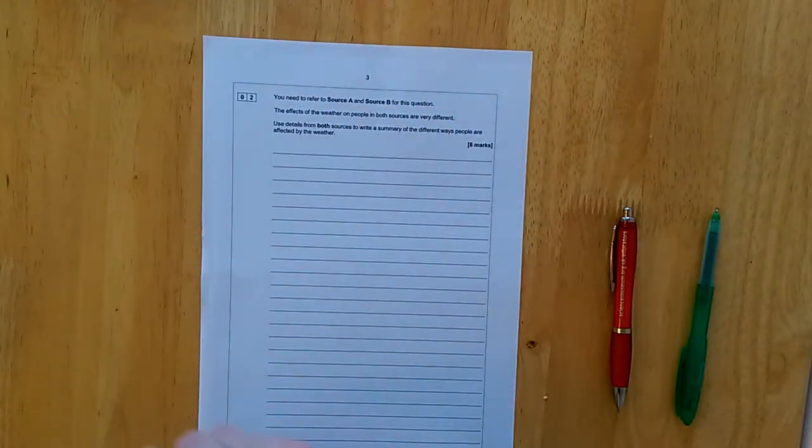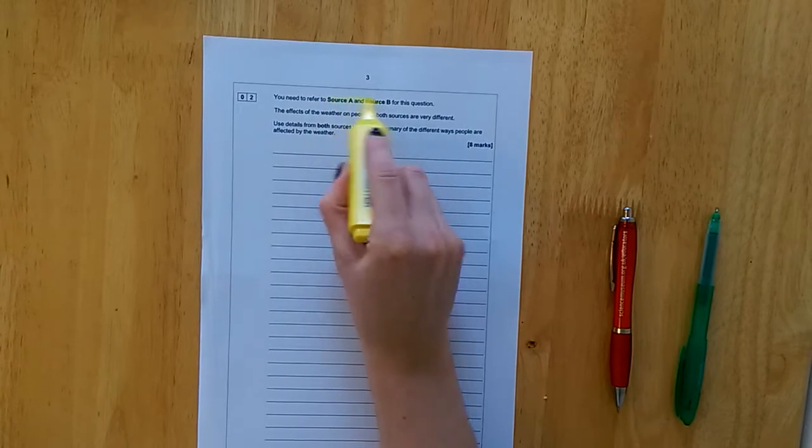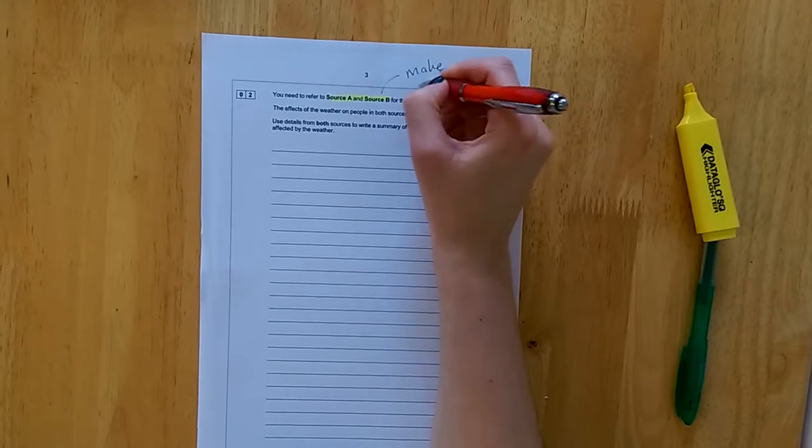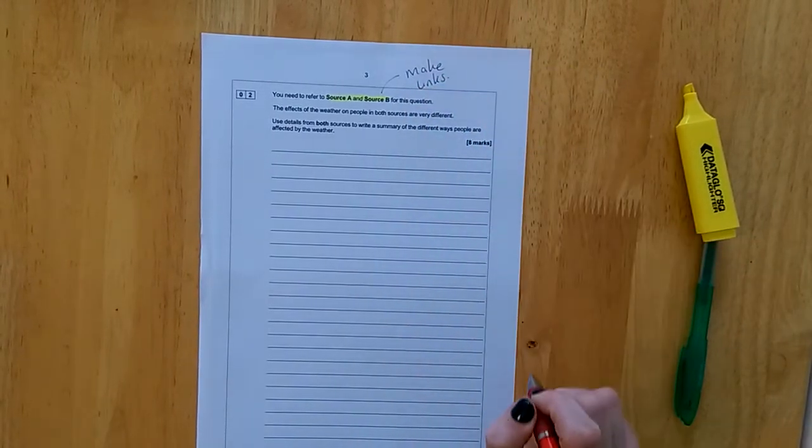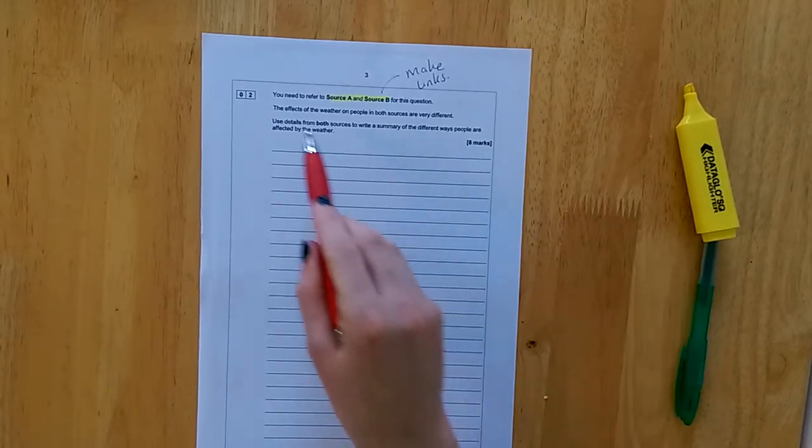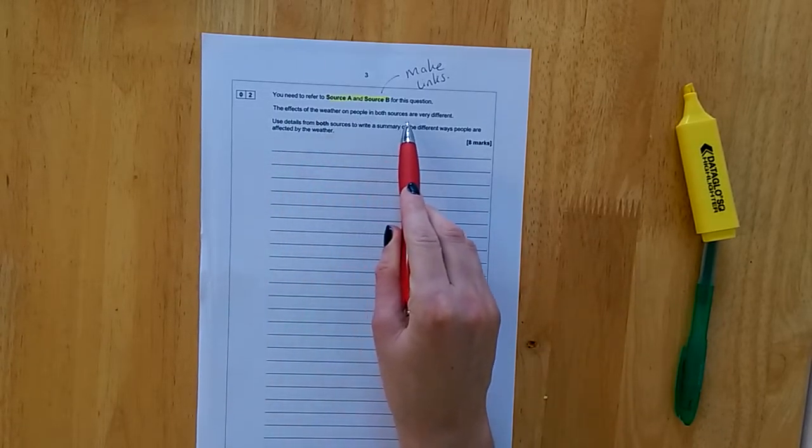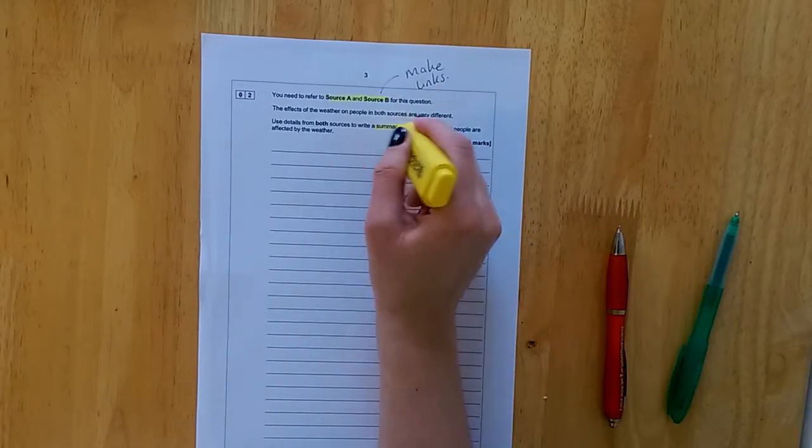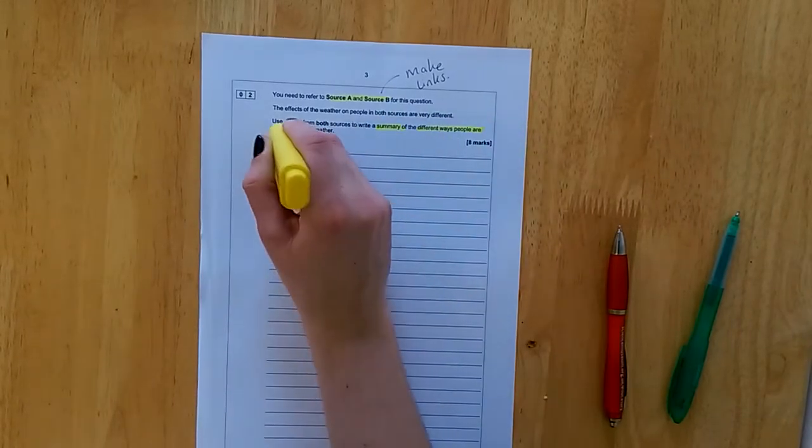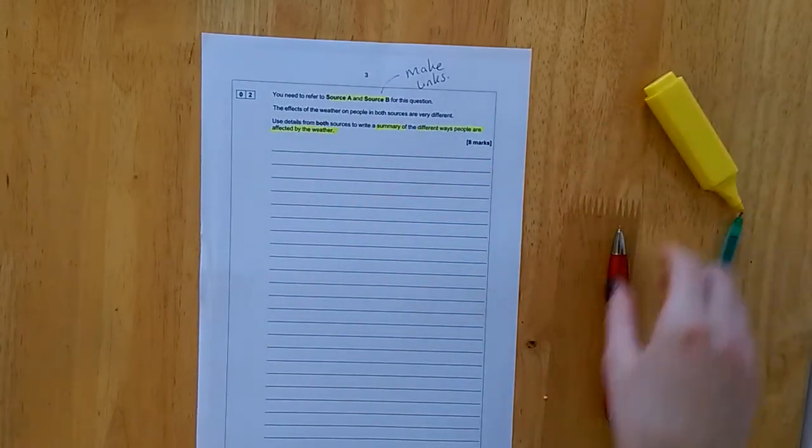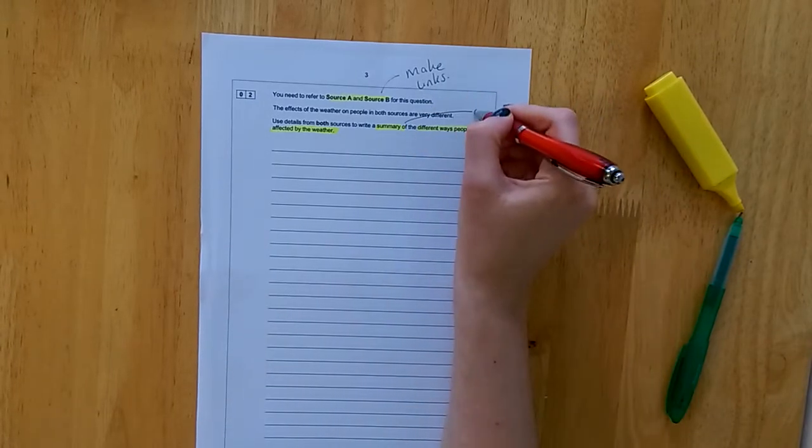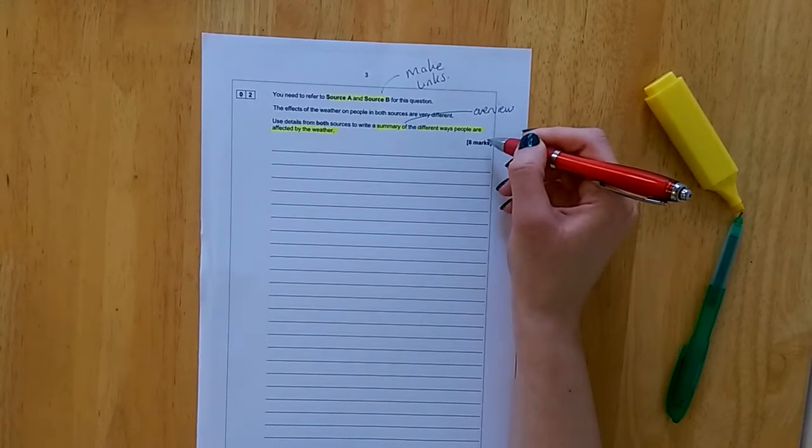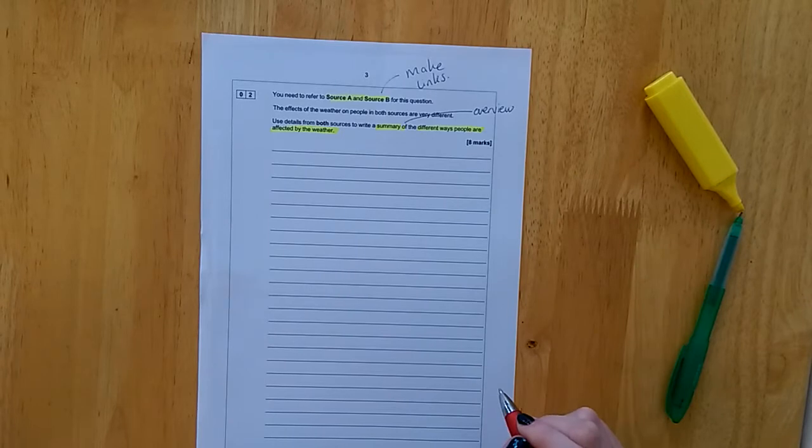Question 2 says that we need to use source A and source B for this question. This shows us that we know we have to make links between the two sources. The question continues: The effects of the weather on people in both sources are very different. We need to use details from both sources to write a summary of the different ways that people are affected by the weather. A summary is an overview of what happens in the text. And the question is asking us about how the weather has affected people in certain ways.